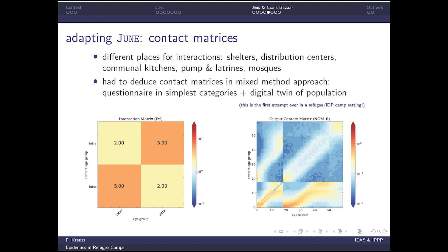You see textures in the contact matrix at age 18, between children, teenagers, and adults, and another texture at age 12 — because one thing we didn't do, and I think we should, is account for the massive behavioral difference between males and females in the camp: males over the age of 12 go to the mosque and the females don't. That's something for future work. Anyway, we produced these matrices and the publication is being put together.